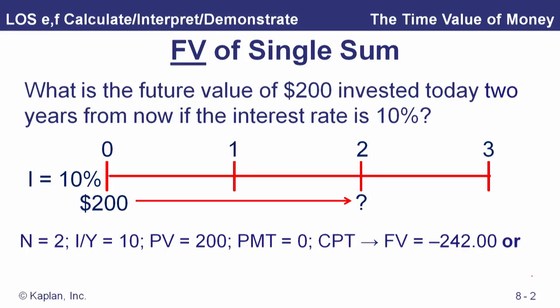Here's the calculator solution: N is 2, our interest rate is 10 — notice we enter the interest rate as a whole value here, 10 percent. Present value is 200, the payment is zero; there's no other payments made into this account. So that future value from the calculator, we get minus 242. Now we get the opposite sign of the present value.